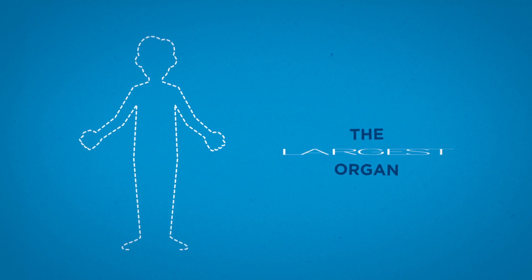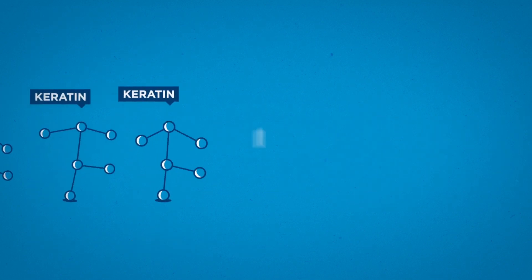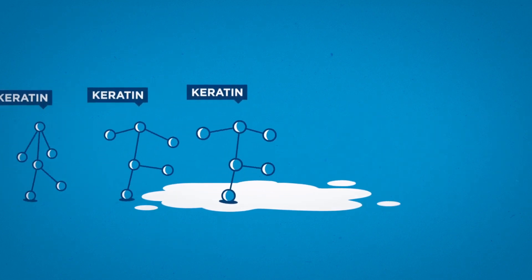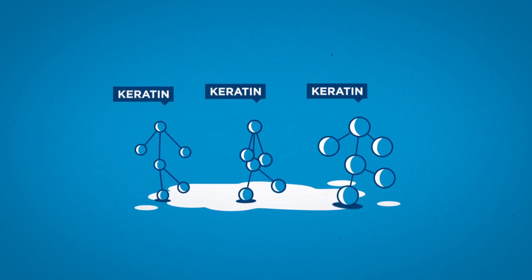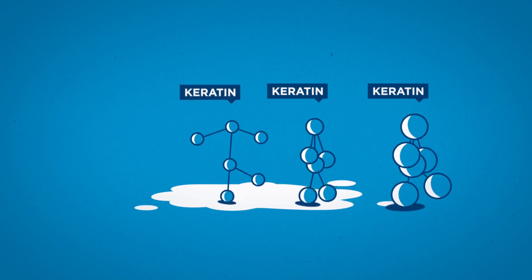Your skin is the largest organ of the body and is made up of cells which contain a protein called keratin. Keratin helps keep the skin hydrated by absorbing water and preventing its evaporation.